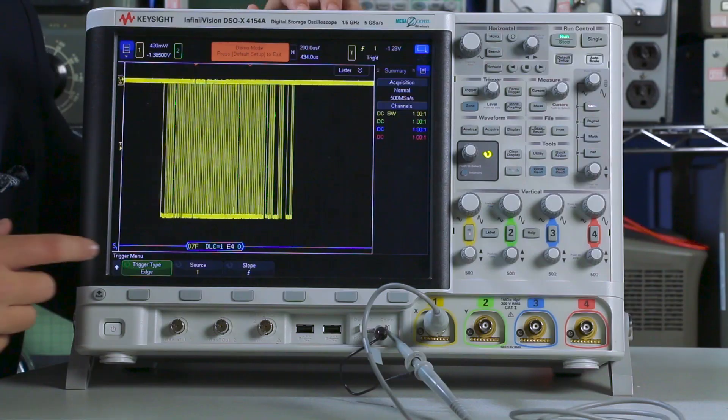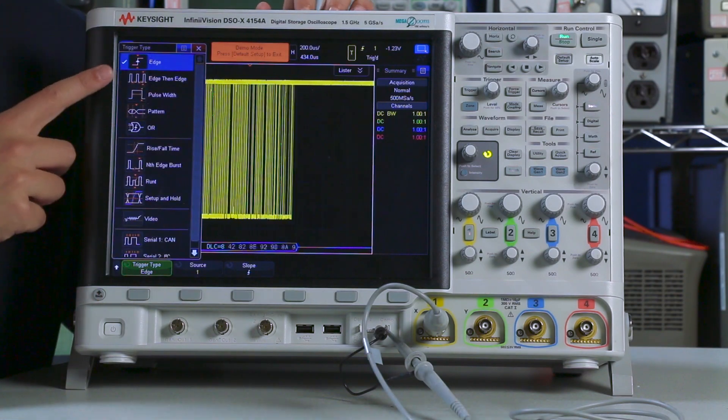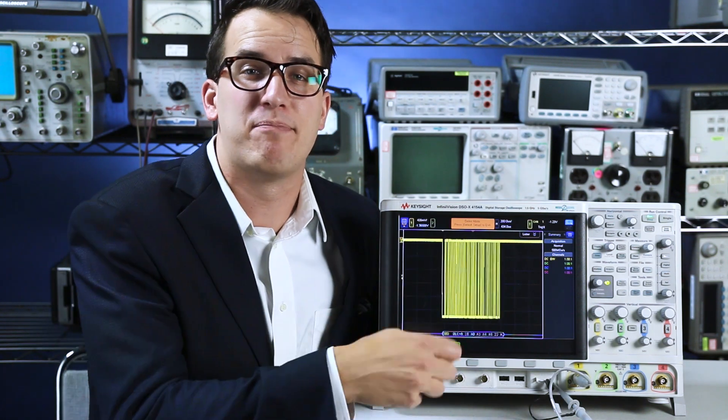And then once your thresholds are set up, you're probably going to want to change your trigger. So I'm going to hit the trigger button, and let's change my trigger from an edge trigger, which is how my scope booted, to a serial trigger.